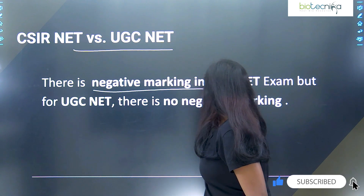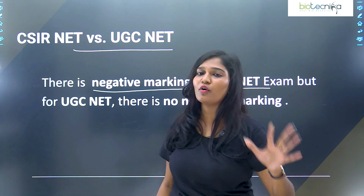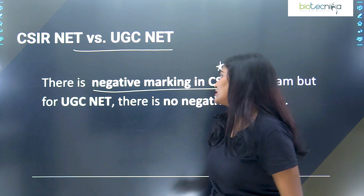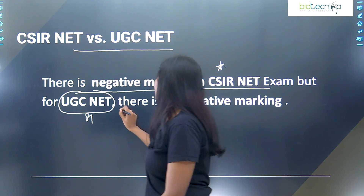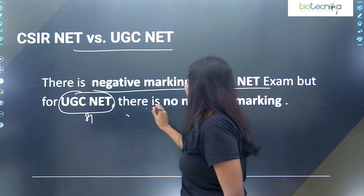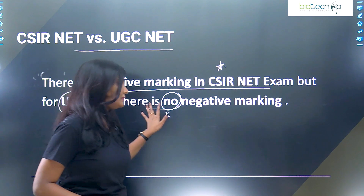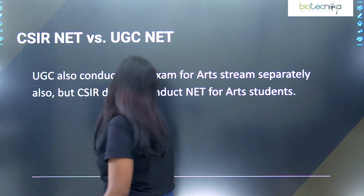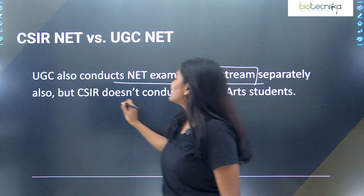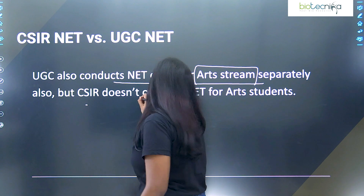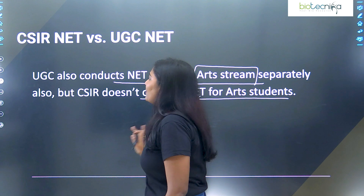Very important: there is negative marking in CSIR NET — Part A and Part B have 0.5 negative marks, and Part C has one mark negative. But UGC NET, which is for 81 subjects, has no negative marking at all. Also, UGC conducts NET exams for arts stream including environmental science, but CSIR does not conduct exams for arts students. This is another important difference.